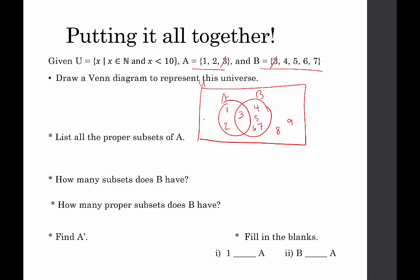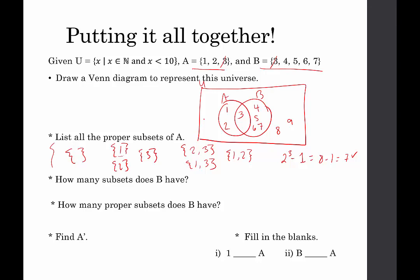List the proper subsets of A. We list the null set, then the sets containing one element each: {1}, {2}, {3}. Then the sets containing two elements: {2,3}, {1,3}, {1,2}. And that's it — seven proper subsets in total, which checks out because two to the third minus one equals eight minus one, which is seven.